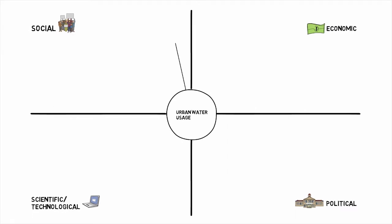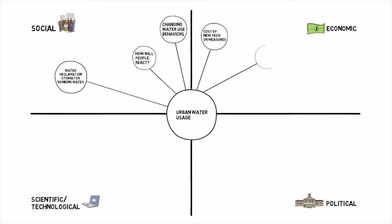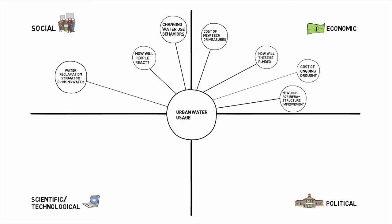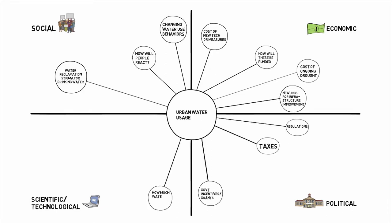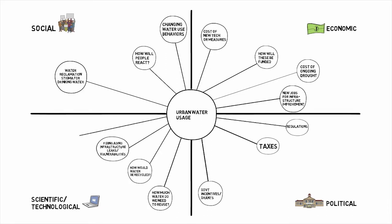Now that your concept map is set up, start writing general questions related to each section. Draw circles branching off from the main topic and write your questions within them. For now, don't worry about writing very specific questions. These questions are meant to guide your research and can be broad. We will work to narrow them down later.